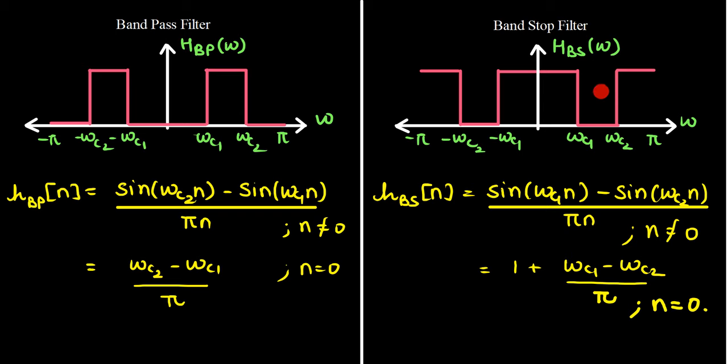The band stop filter rejects the frequency components available in a particular band from omega_c1 to omega_c2. Its time domain equivalent is h_bs(n) = [sin(omega_c1 * n) - sin(omega_c2 * n)] / (pi * n) for n not equal to 0, and it is equal to 1 + (omega_c1 - omega_c2) / pi for n equal to 0.